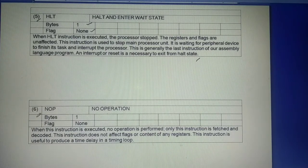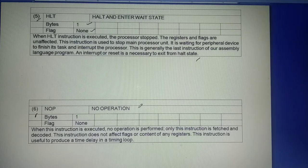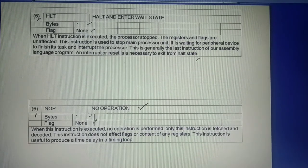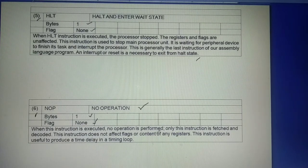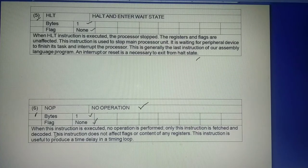The sixth instruction from the other instruction group is NOP — No Operation. This is a 1-byte instruction, and flags affected: none. When this instruction is executed, no operation is performed. Only this instruction is fetched and decoded.